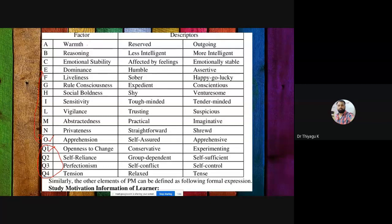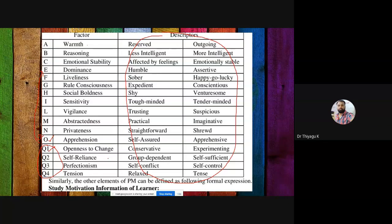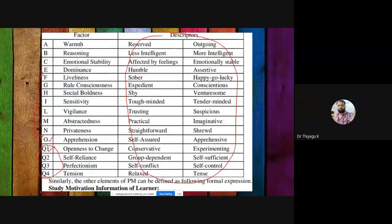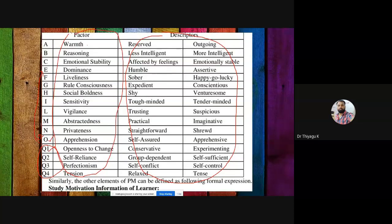Factor A represents warmth. The low range descriptors include reserved, impersonal, detached, and formal. The high range descriptors include outgoing, warm, and participating. Some of the original terms can be unfamiliar, which is why other psychologists who follow this theory provide alternative descriptions to make the meaning of each factor clearer. The core 16 factors remain the same for all psychologists adopting this theory.